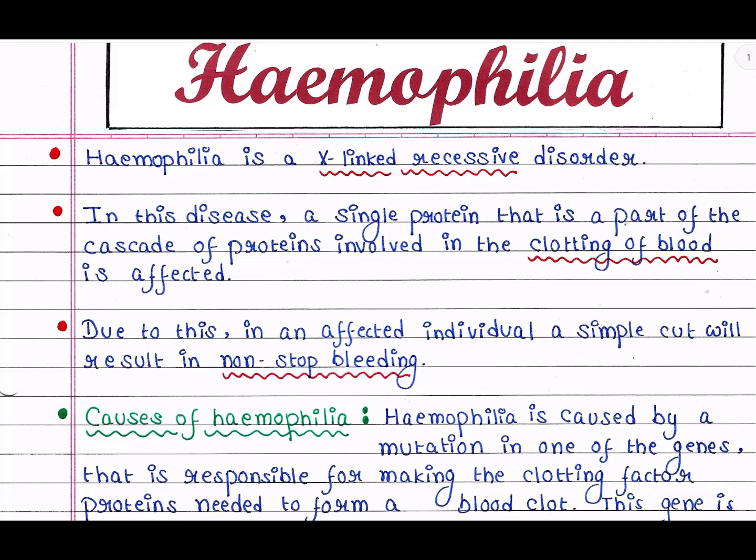Hemophilia is an X-linked recessive disorder. That means the gene responsible for this disease is placed on the X chromosome. In this disease, a single protein that is part of the cascade of proteins involved in the clotting of blood is affected. Our blood contains many blood clotting factors which work together to stop bleeding when required. These clotting factors are proteins that work in a cascade — that means they work in a series. In hemophilia, one of these factors is affected.